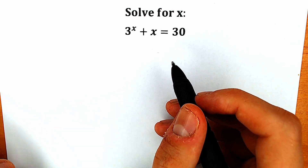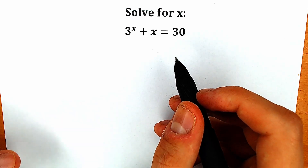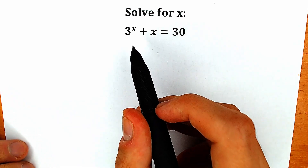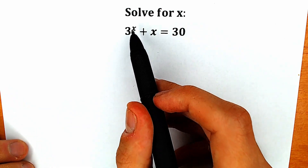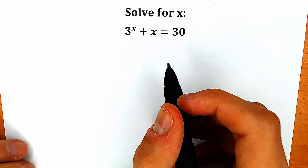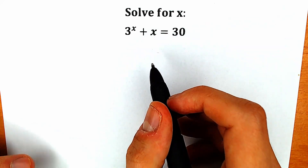Hello everyone! Welcome back to my channel Higher Mathematics! Today we have a very interesting exponential equation from Math Olympiad: 3 to the x plus x equal to 30, and we need to find x.